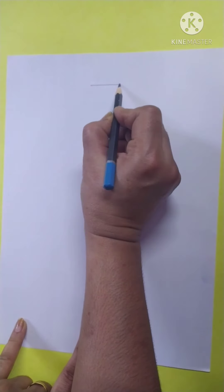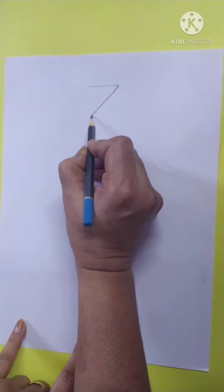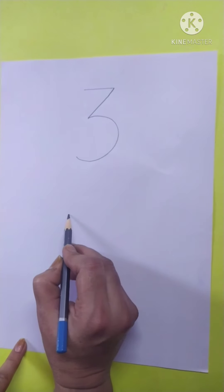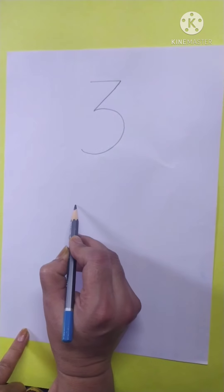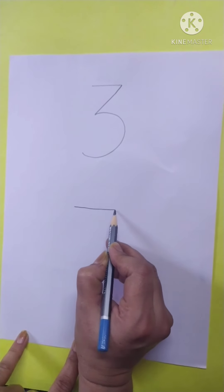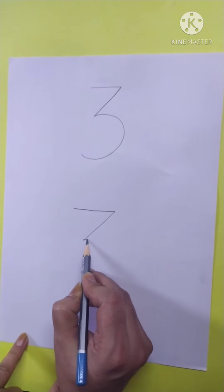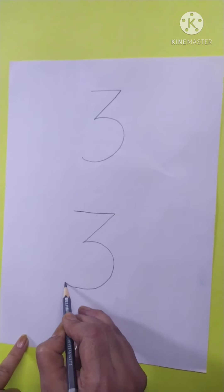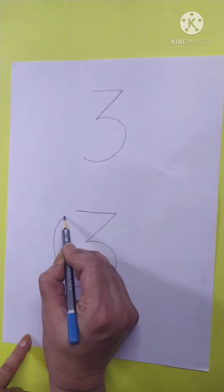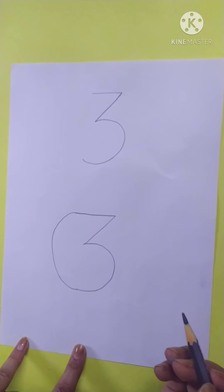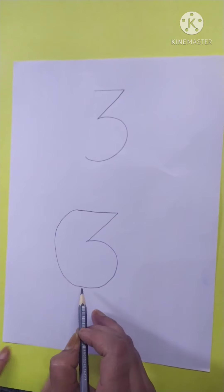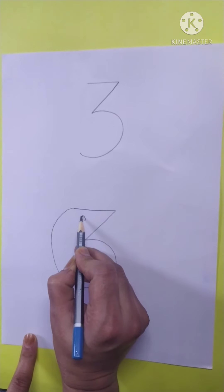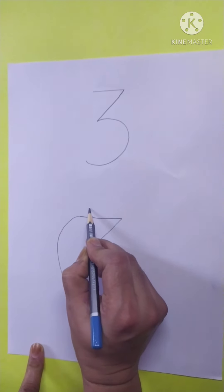How many ice creams are there? Three ice creams. Now let me show you the magic picture of number three. This is number three — we make it round and round like a circle.